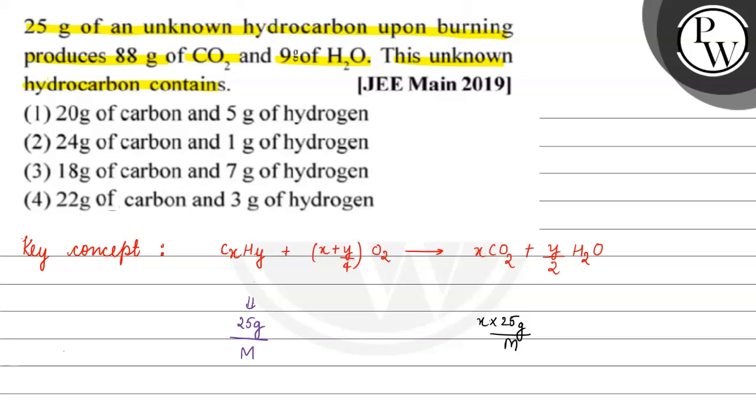In our question, we have 88 grams of carbon dioxide. If we find the moles of carbon dioxide, we will basically compare them. The number of moles of carbon dioxide is equal to 88 grams by 44 grams per mole, which gives us 2 moles. This equals 25 by m into x. Equate it to 2, and we will find x's value.